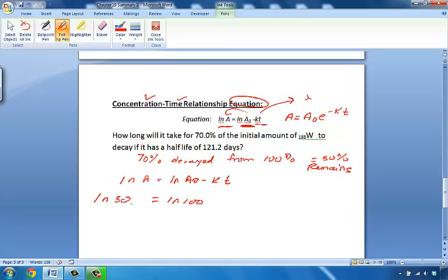So, you can actually use 30 and 100 because you're assuming that the total originally was 100%. 70% per the problem has decayed, so only 30% should be remaining.